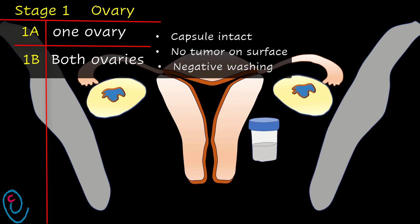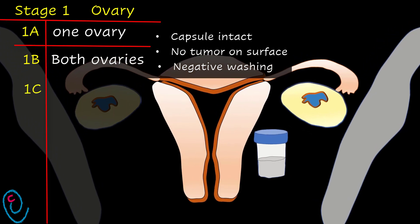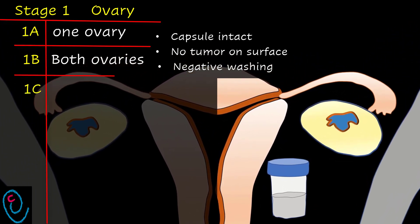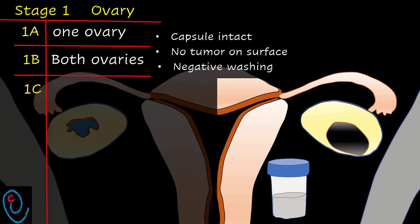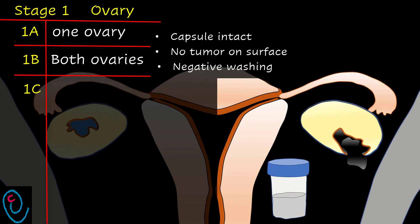In 1c, the tumor is limited to the ovaries with additional criteria. In 1c1, an ovarian cyst ruptured during surgical excision, and this cyst is malignant. This is known as surgical spill.